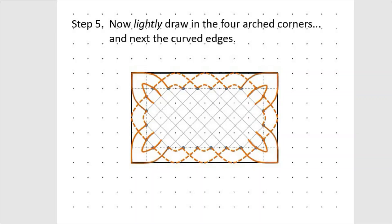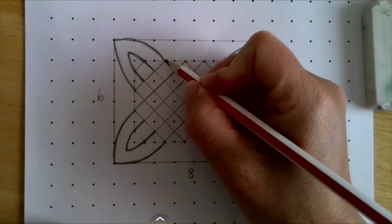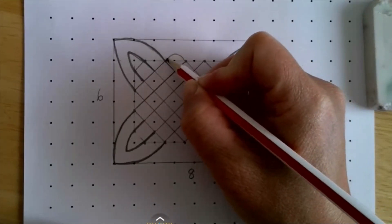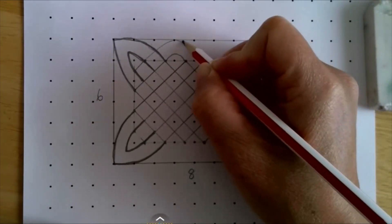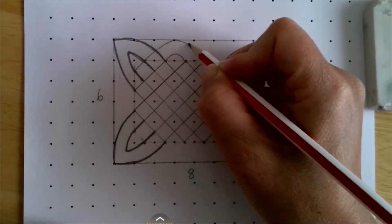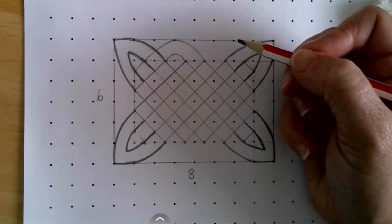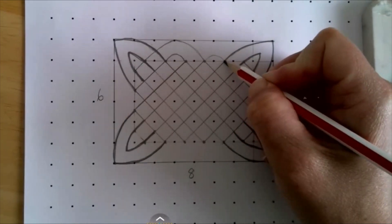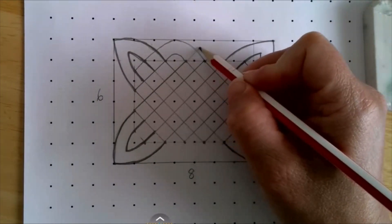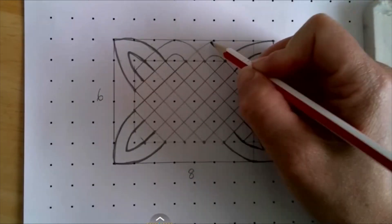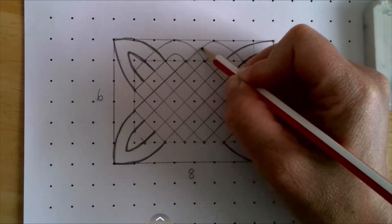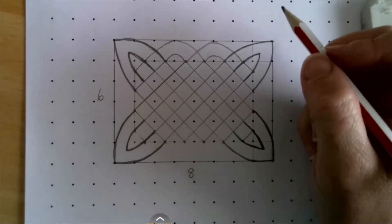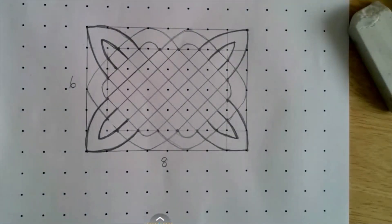Once I've got my four arched corners, I'm now going to draw my curved edges. And as you can see, I'm going to draw my curved edges. I'm going to pause the video, and I'll work my way around. Your knotwork should now look like this.